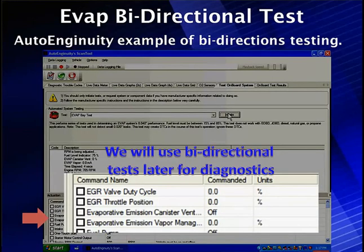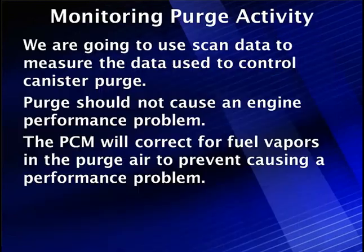Here's something that's really beneficial. We can use bidirectional tests on our Auto Ingenuity scan tool. We can go in and check the evaporative emissions canister vent — turn it off and on, meaning open and close it. Off is open, on is closed. We can then go down and check emissions vapor management valve, run the percentage up. At the same time, we can watch the scan tool and see what our fuel tank pressure sensor is doing. We can do that ourselves or run the automatic test — whichever one you want to use.